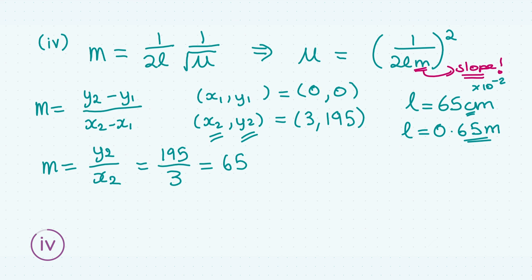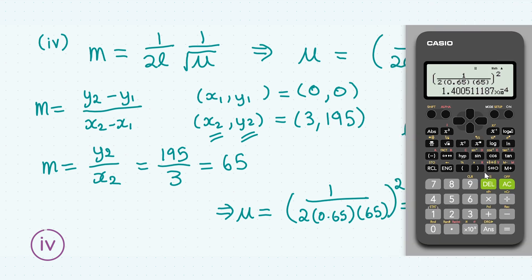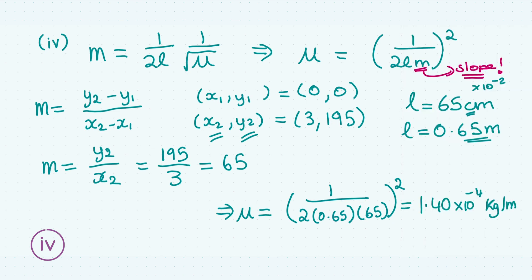Now we have our expression for μ, let's plug in values. μ = 1/(2 × 0.65 × 65)², being very careful to add brackets in the calculator for each variable. This turns out to be a very small number: 1.4 × 10⁻⁴ kg/m, because mass per unit length has units of kilograms per metre. Your final marks come from getting the slope — two marks — and the final answer — two more marks.